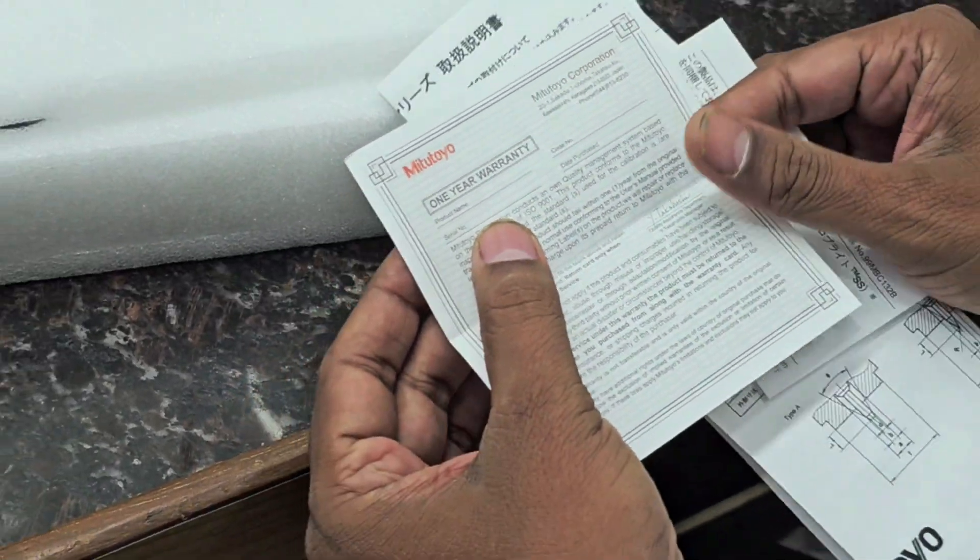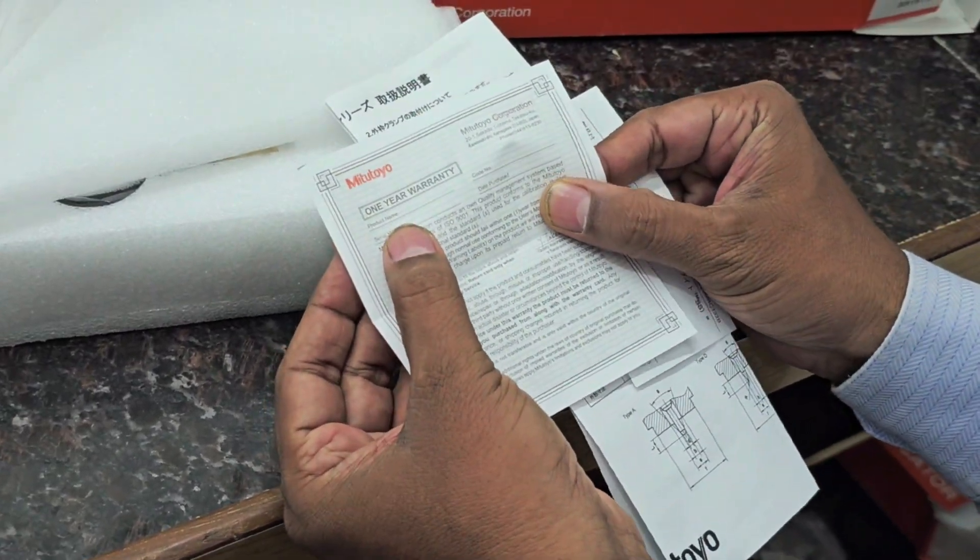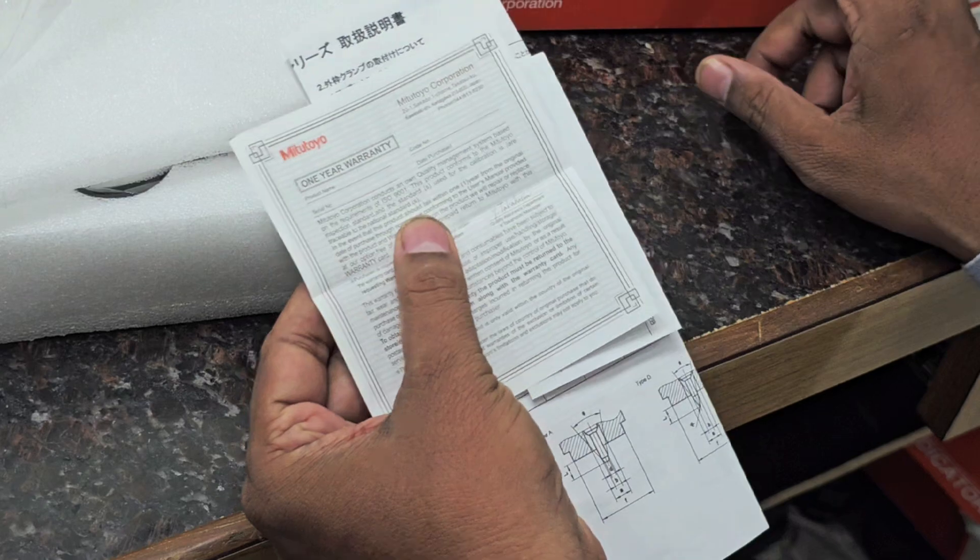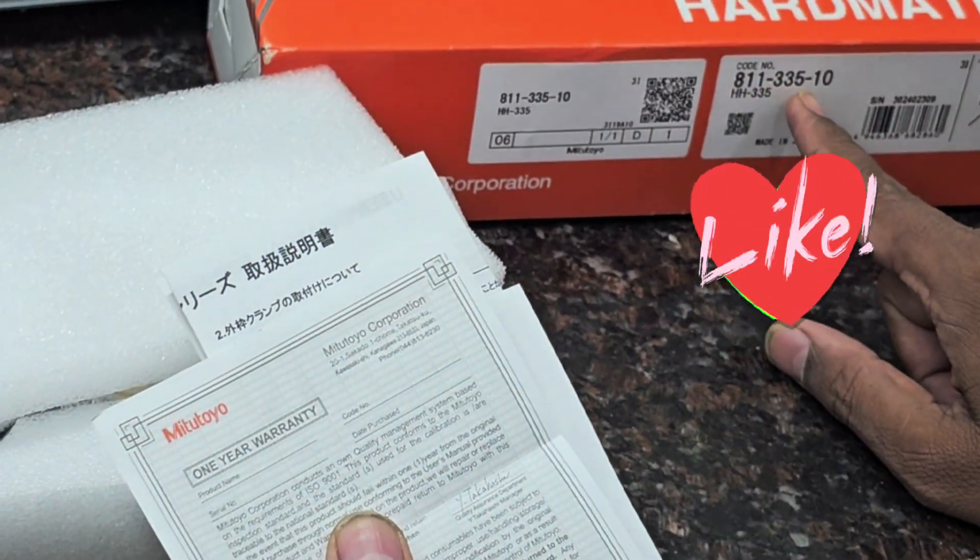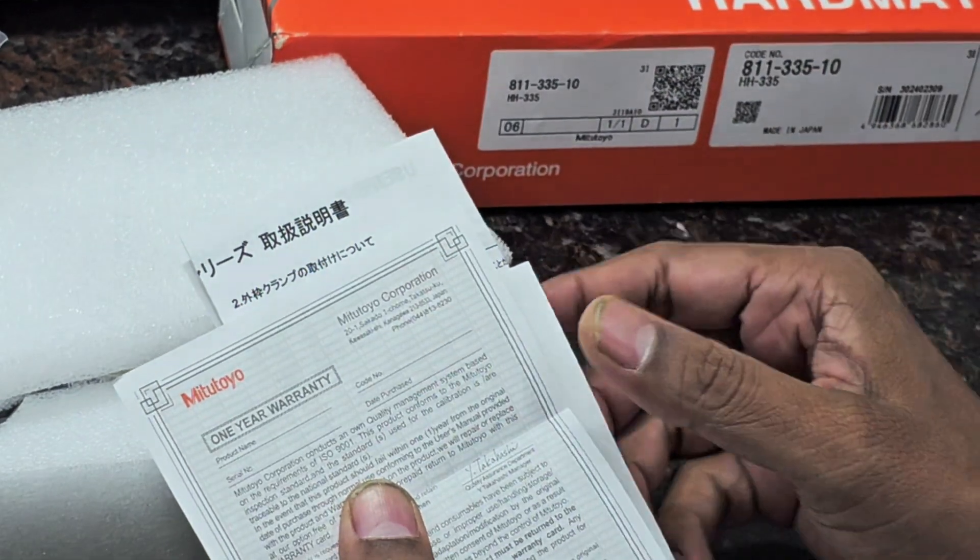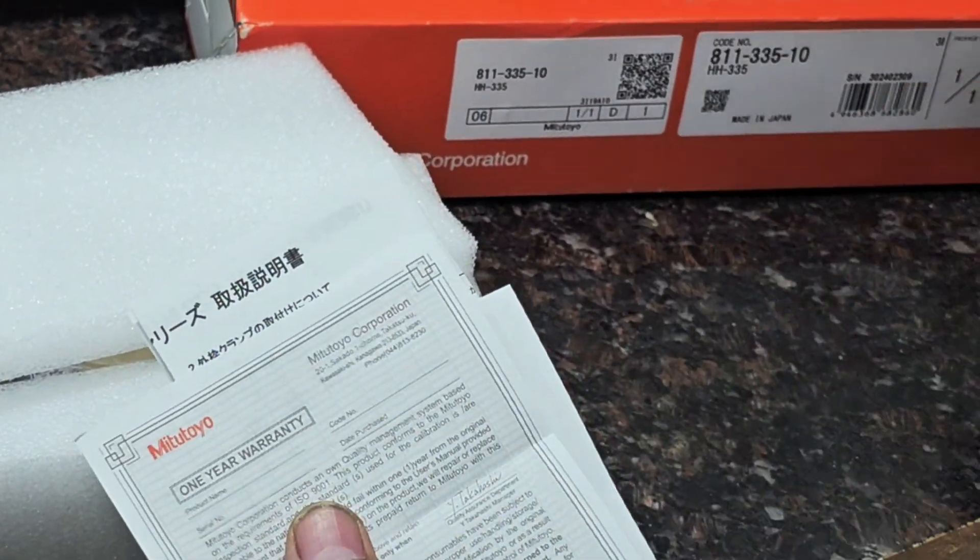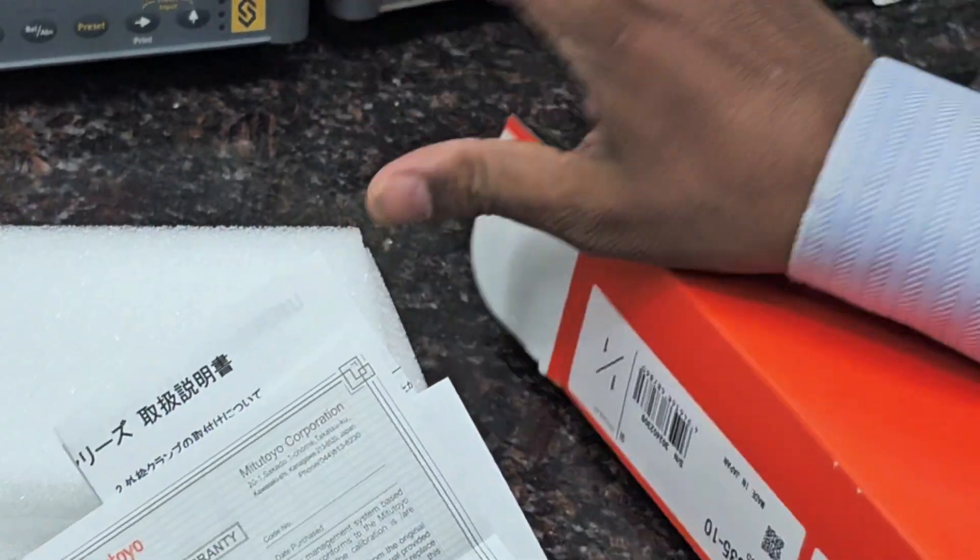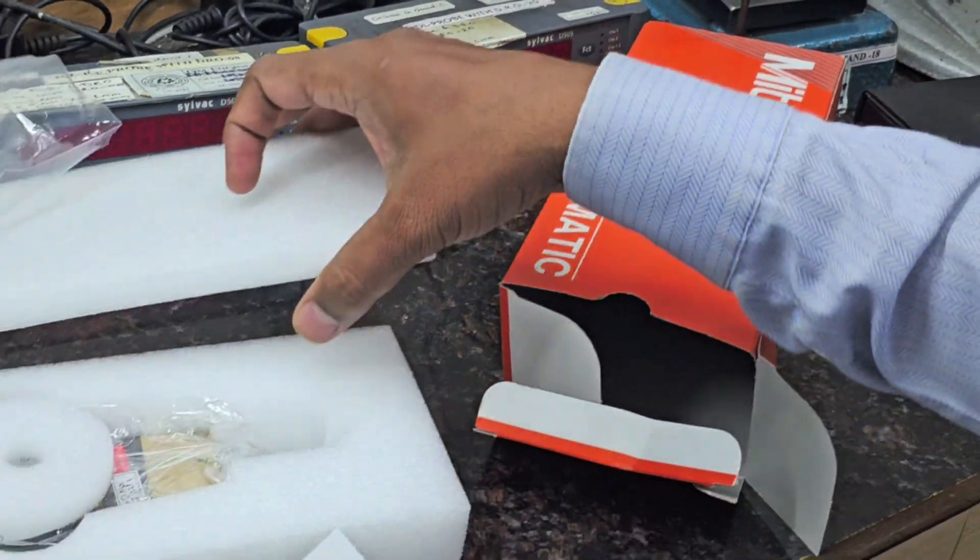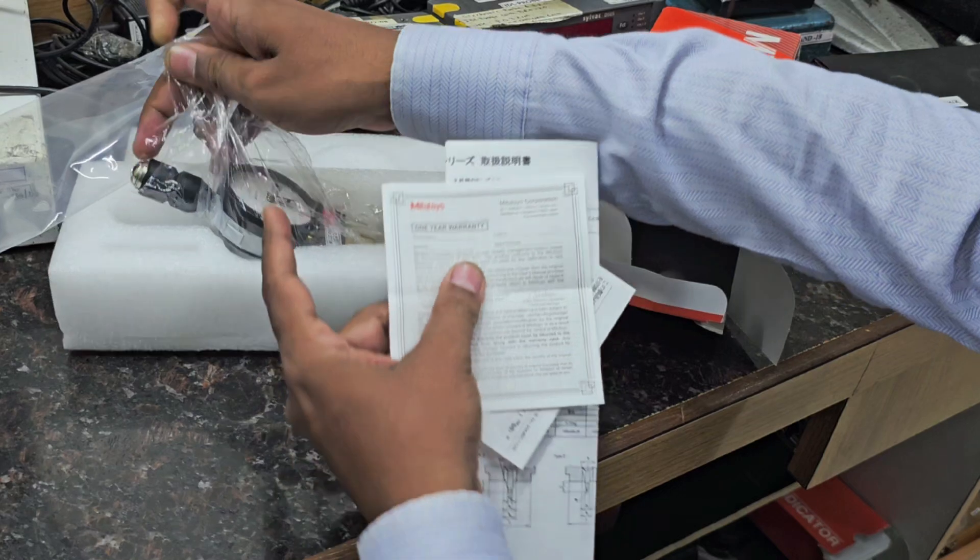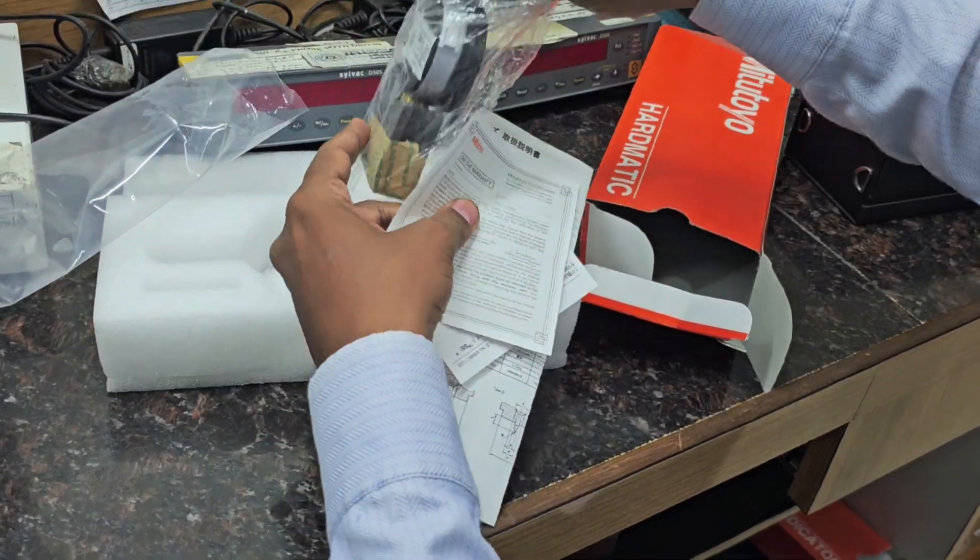You can write down your own information. Product name is Mitutoyo Hardmatic. Code number is 811-331-10, which you can write here. The serial number is given on the box or you can take it from the instrument ID.